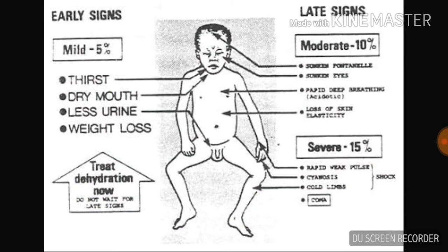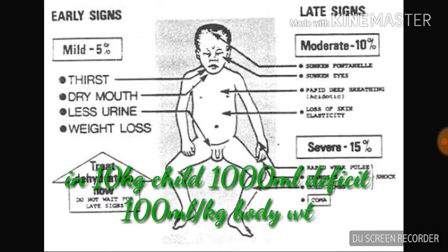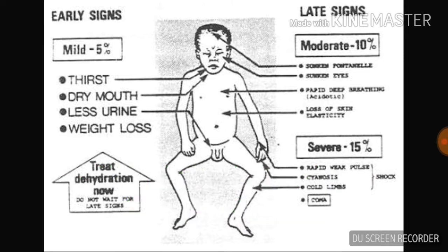What is mild, moderate, and severe dehydration? If dehydration is 5% of body weight — for example in a 10 kg child — it is mild dehydration. This can be assessed by thirst, dry mouth, less urine, and weight loss. In moderate dehydration there will be sunken fontanelle, sunken eyes, rapid deep breathing, and loss of skin elasticity, that is a decrease in skin turgor.